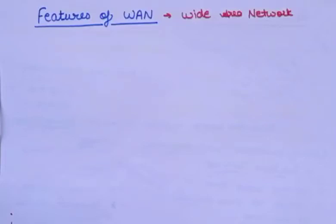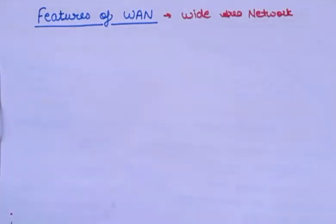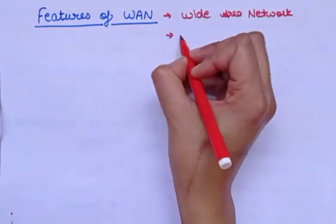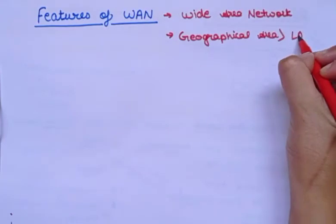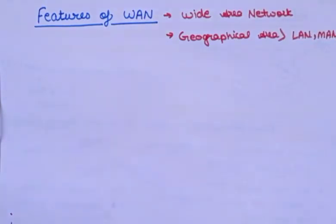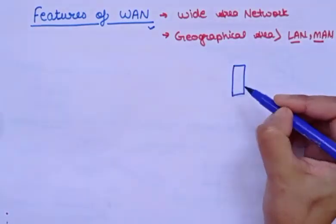Hi students, welcome to the channel. Today in this video we are going to cover the basic features of WAN network. As in the previous video we discussed the general introduction of this type of network. The full form of WAN is Wide Area Network, and the geographical area of WAN is greater than LAN and MAN networks. In the case of LAN, there is an office building or school building.